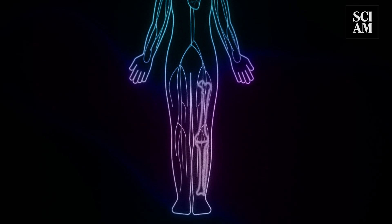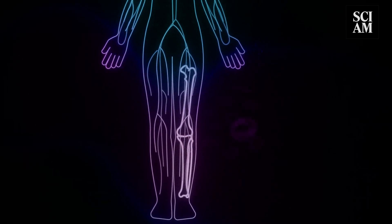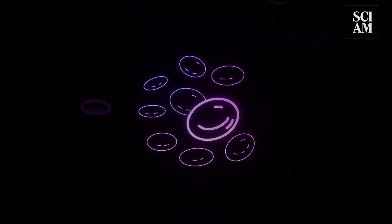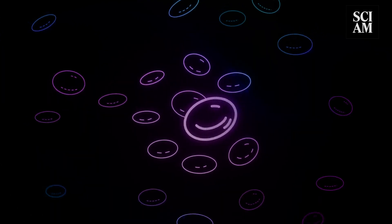Every second of your life, 2 to 3 million red blood cells pour out of your bone marrow into your bloodstream. You have around 35 trillion of them moving around your body at all times.